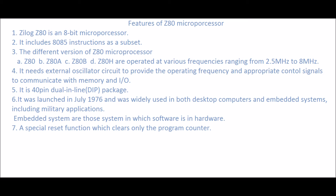It includes 8085 instructions as a subset. The different versions of the Z80 microprocessor are: Z80, Z80A, Z80B, and Z80H, which are operated at various frequencies ranging from 2.5 MHz to 8 MHz.